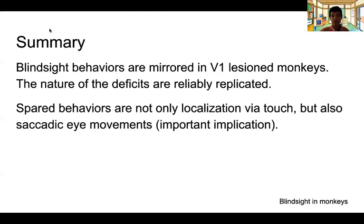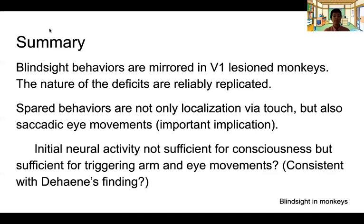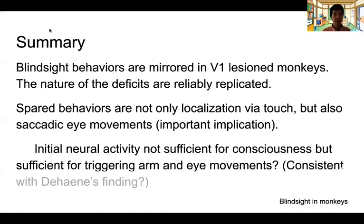This has important implications for consciousness. Taken together with Haynes's finding from the last part of the lecture, initial neural activity is not sufficient for consciousness — as demonstrated by EEG evidence — but it may be sufficient to trigger and guide behavior via arm and eye movements. That may be what leads to blindsight behavior. They can move and walk because the initial visual response is intact, and the transient visual response is used by arm and eye movements. That's the potential explanation of blindsight, and we will go into detail next week about this hypothesis.